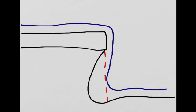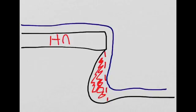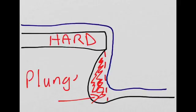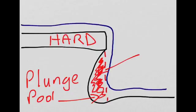What you can see here is that the soft rock in this area has eroded much quicker than the hard rock above. This creates a feature called the plunge pool. The eroded material from this red shaded area falls down into the plunge pool, is eroded, and then is transported further downstream.